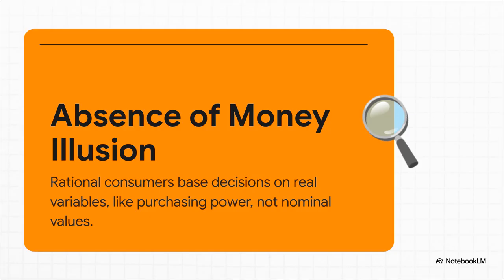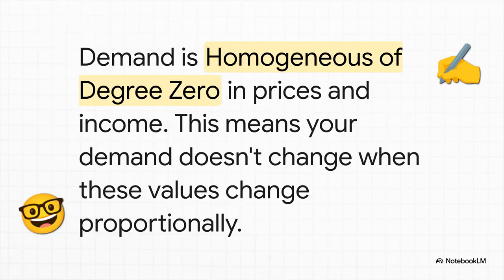It's the principle that rational people aren't fooled by just the face value of money — the nominal value. We're smart enough to see right through the numbers and focus on what really matters: our actual purchasing power. Our choices are based on what we can get, not the number written on the bill. Economists call this the demand function being homogeneous of degree zero. All it means is that if you multiply all the prices and your income by the same number, your demand stays exactly the same.